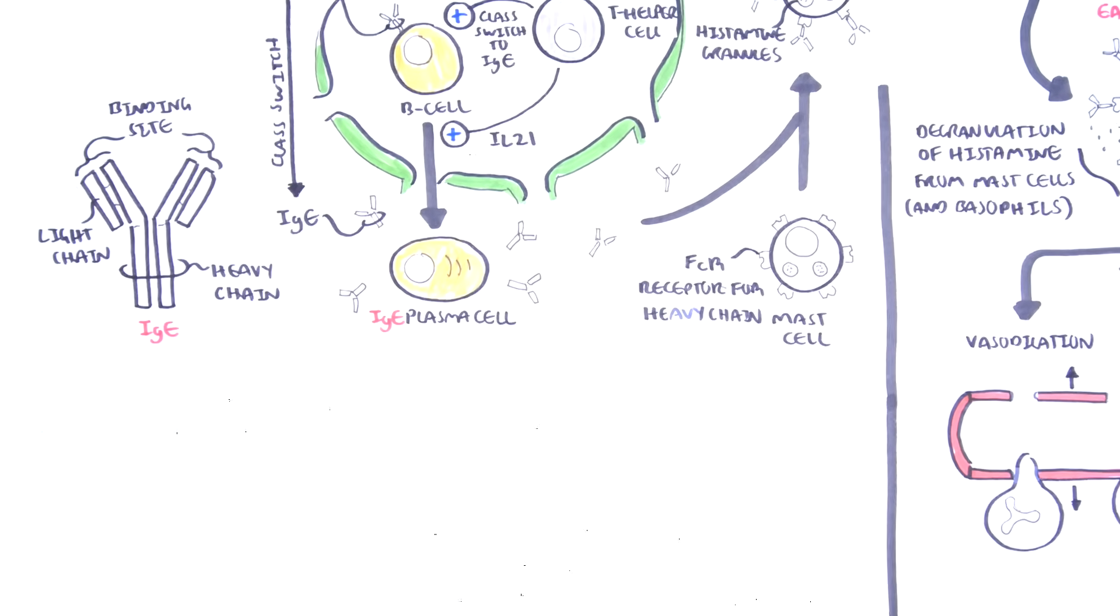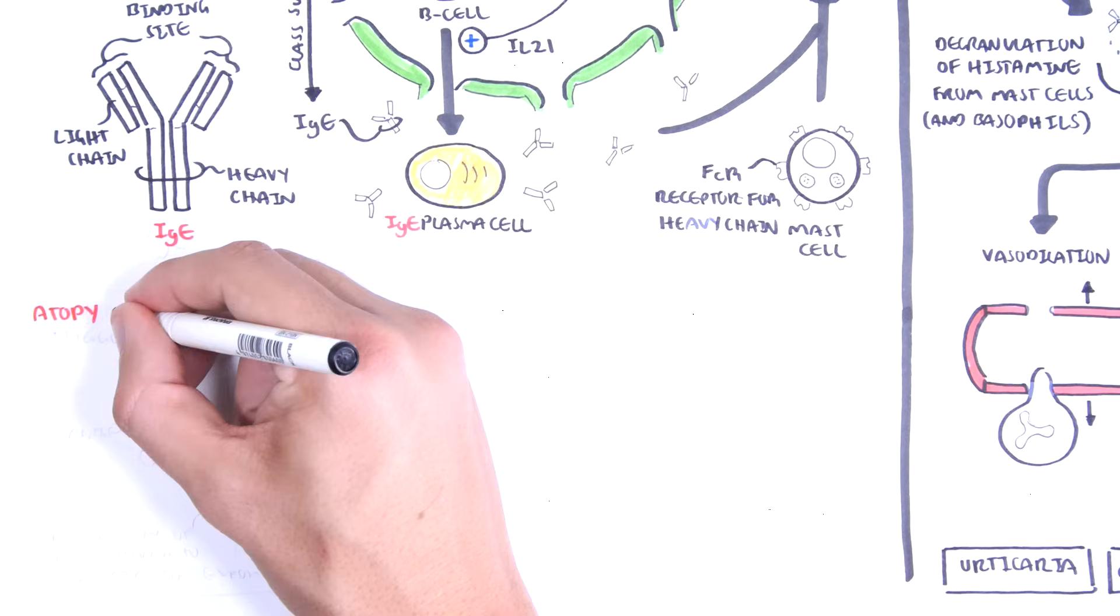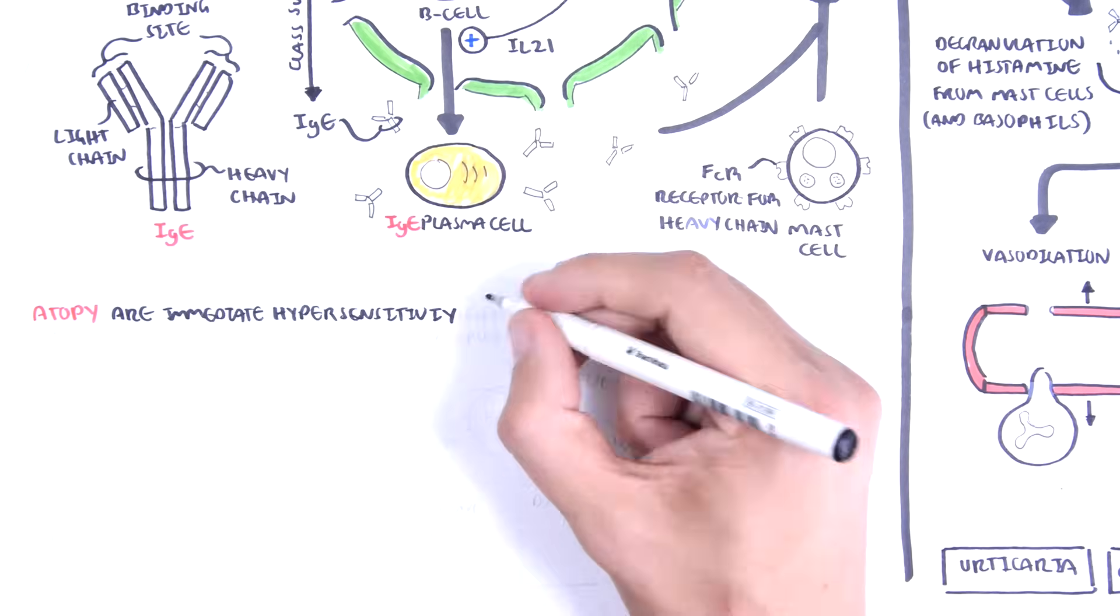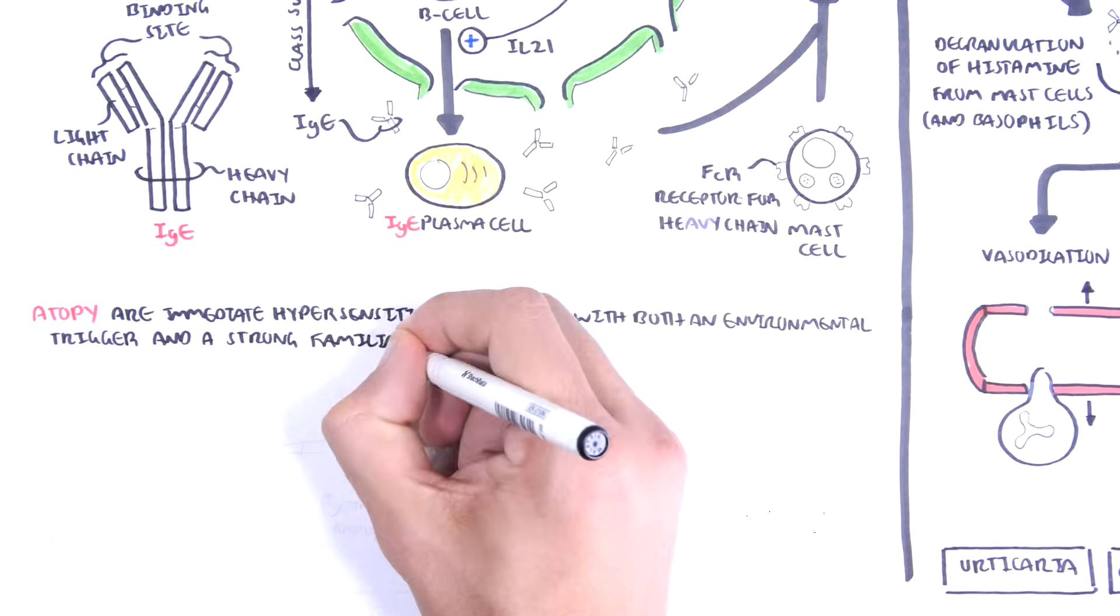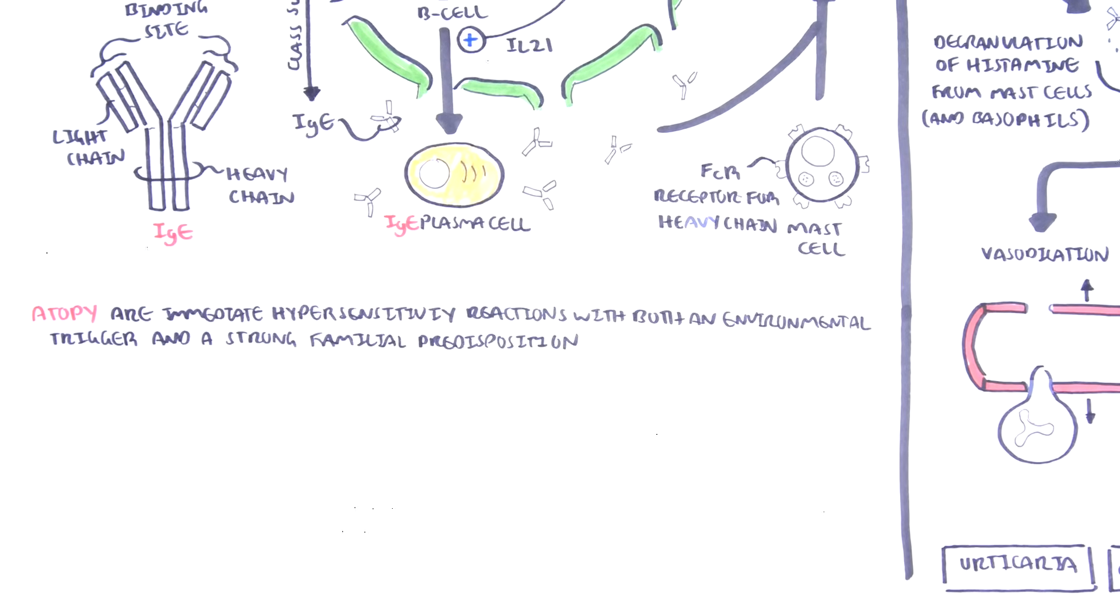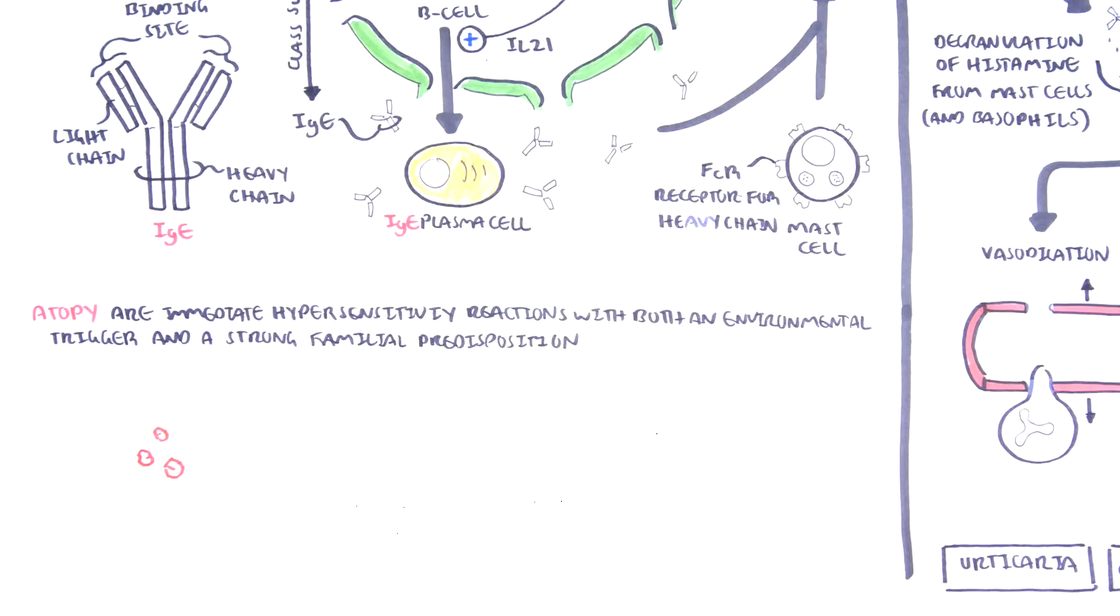Another concept to understand is atopy. Now, atopy are immediate hypersensitivity reactions with both an environmental trigger that we talked about, as well as a strong family predisposition. Hay fever, asthma, and eczema tend to run in families.